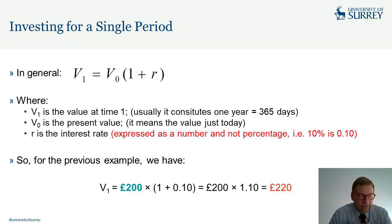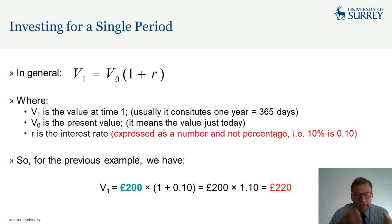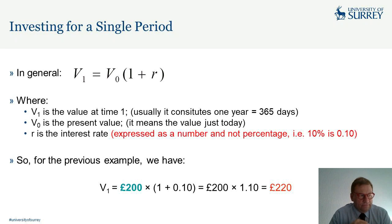Applying this formula to the previous example: V0 is £200, r is 0.1, so V1 = 200 × (1 + 0.1) = 200 × 1.1 = 220.